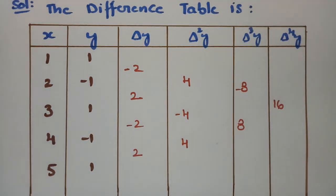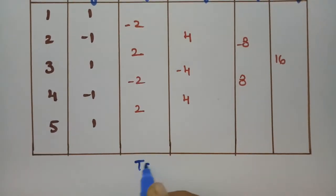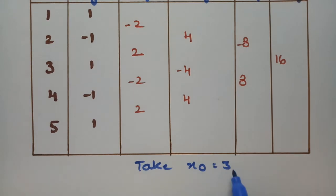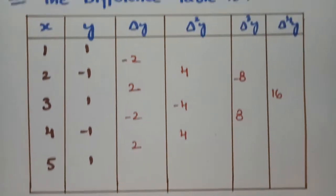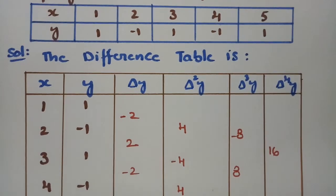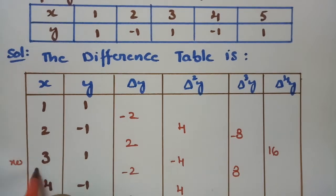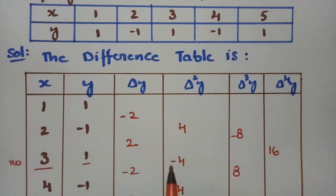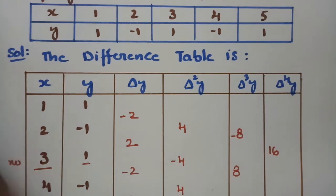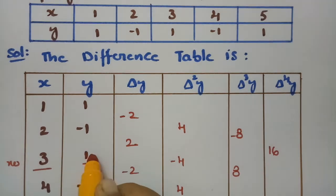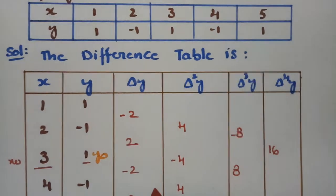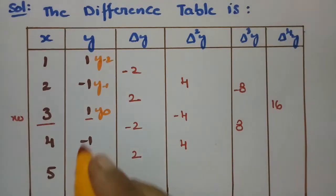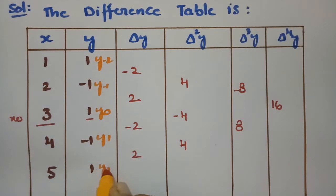So here we have to take x naught value as 3. If you select x naught value as 3, we have to find the polynomial. So this will be x naught. If it's x naught, the corresponding y value will be y naught. And these are the values required. So if the value is y naught here, this will be y minus 1 and y minus 2, and this is y₁ and y₂.